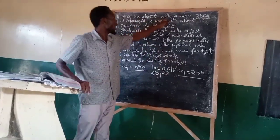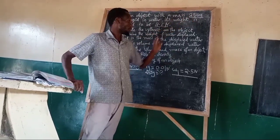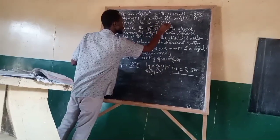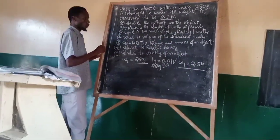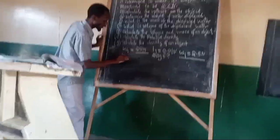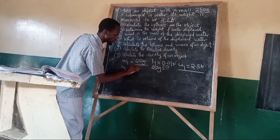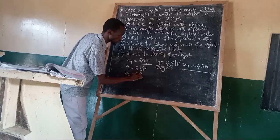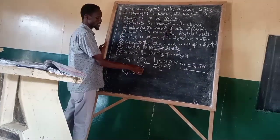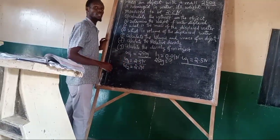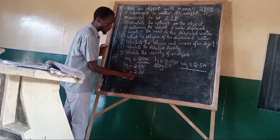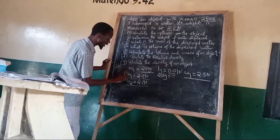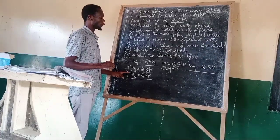This object was having a mass of 250 g. And if that is the case, it was recorded as 2.2 Newton when it was submerged in water. Therefore, this first weight W1 is 2.5 Newton, and the second weight, that is the apparent weight, is 2.2 Newton. This is the weight of an object in air, which is called the true weight, and this is the weight of an object in water, which is called the apparent weight. This is now the data that we are having in our question.